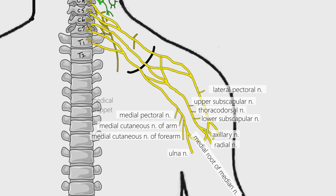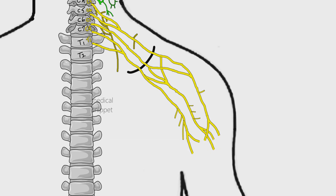We'll discuss the five main terminal branches of the brachial plexus that arise from the cords. These are musculocutaneous nerve, axillary nerve, median nerve, ulnar nerve, and radial nerve.